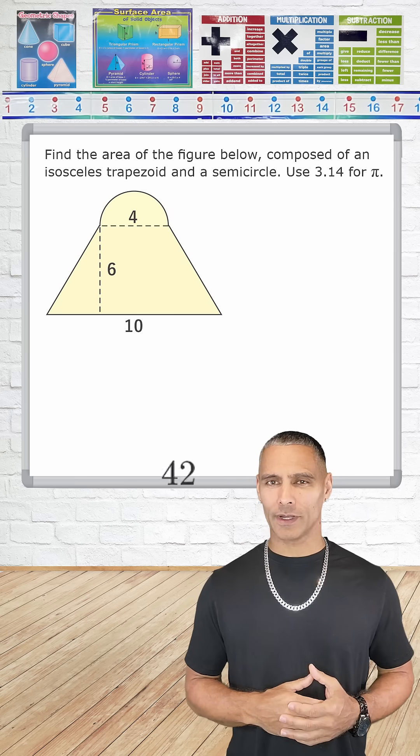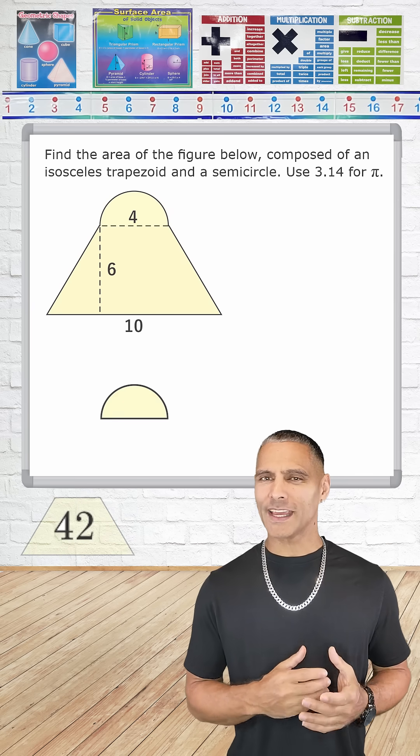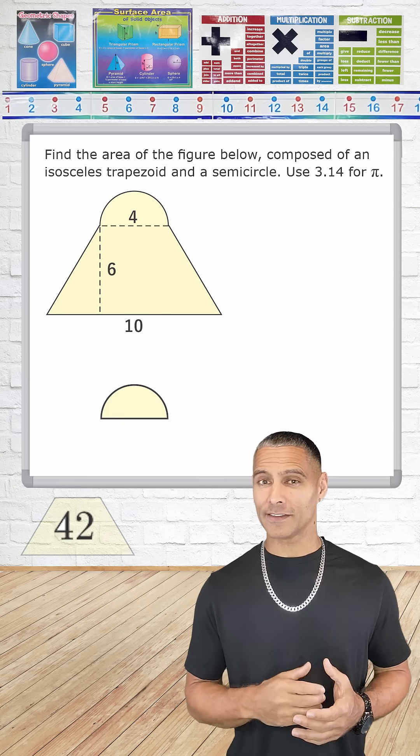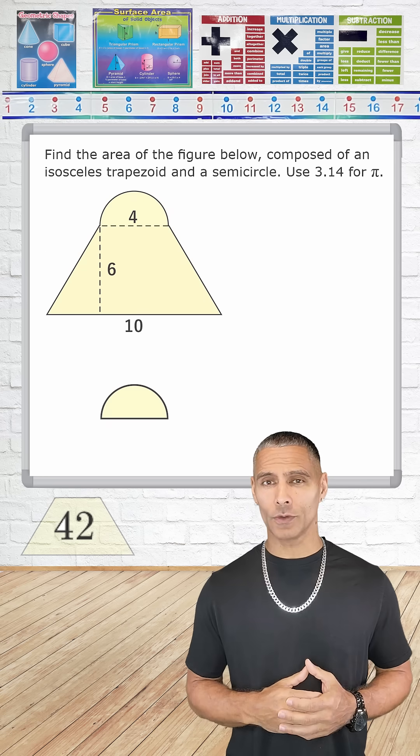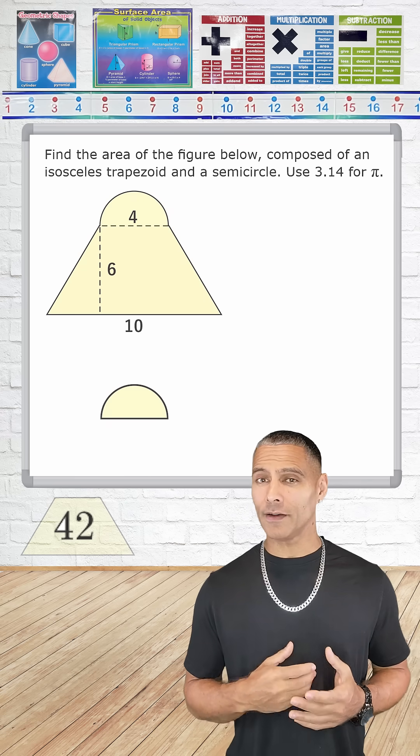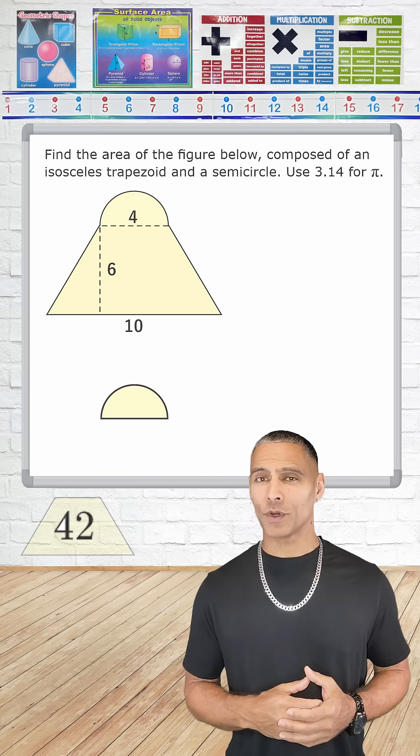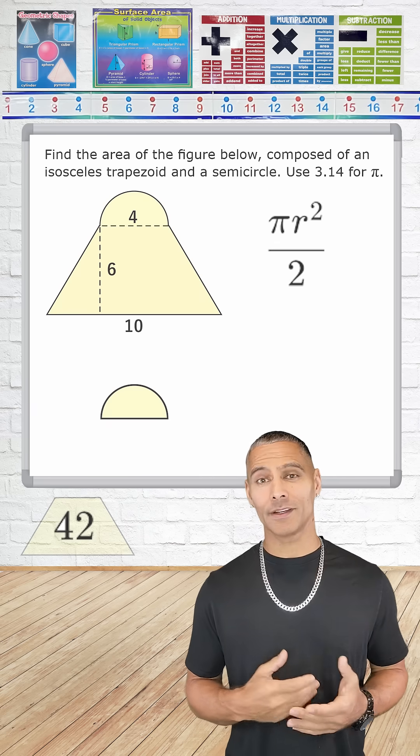Next, we have to find the area of the semicircle. Because the area of a semicircle is exactly half that of an entire circle, we use the area formula of a circle divided by 2, which is pi times the radius squared divided by 2.